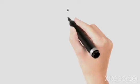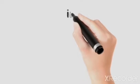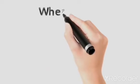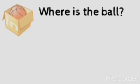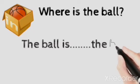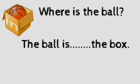Second preposition: 'in'. You can see a ball and a box. Where is the ball? The ball is in the box.